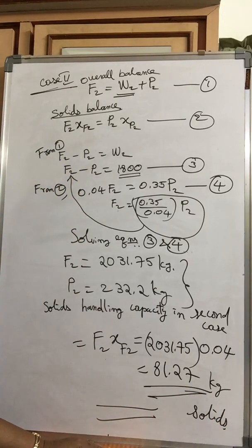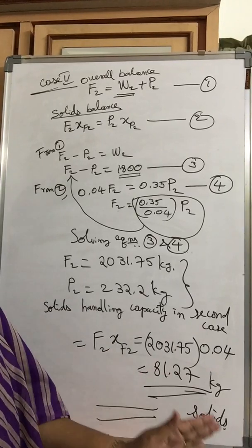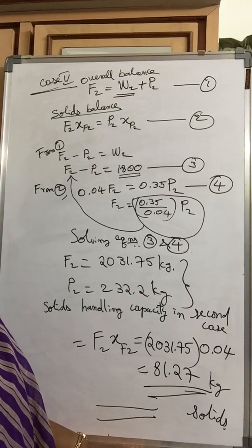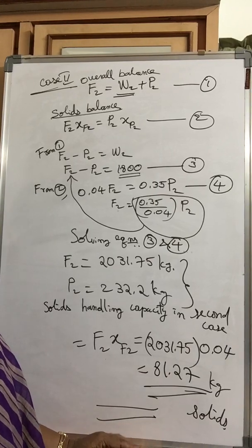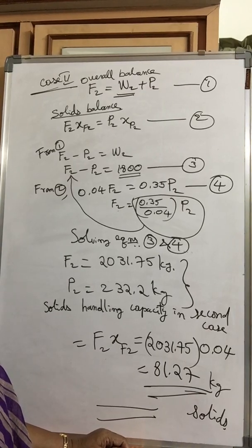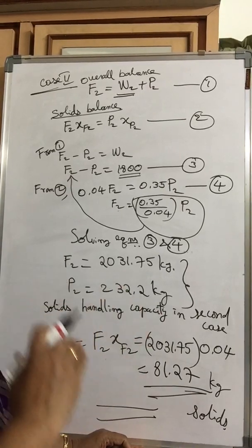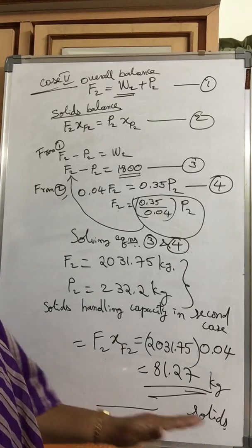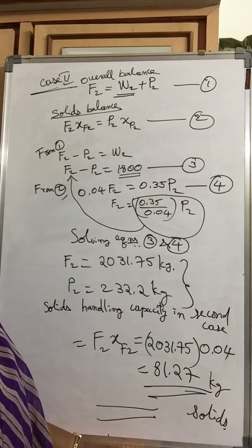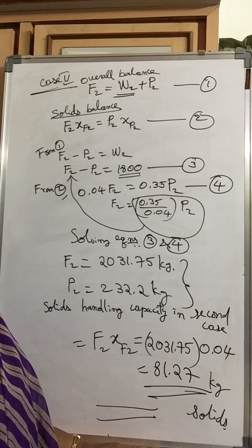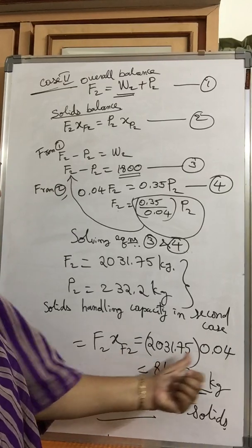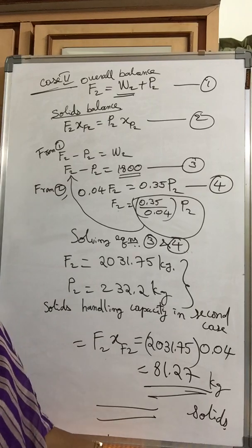In conclusion: in Case 1, initial and final concentrations were given along with solids handling capacity, allowing us to calculate W1 = 1800 kg. Using W1 = W2 for Case 2, and with XF2 and XP2 given, the material balances gave F2 = 2031.75 kg. The solids handling capacity F2 × XF2 = 81.27 kg per hour is the answer for the second case.